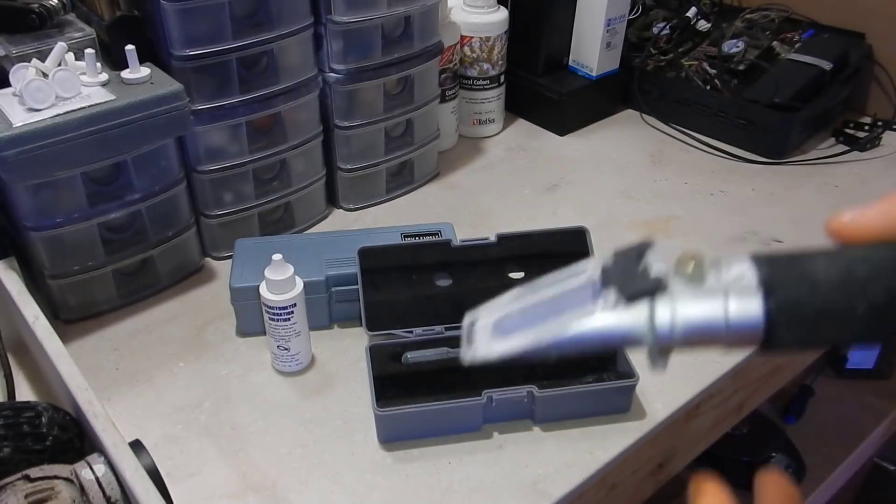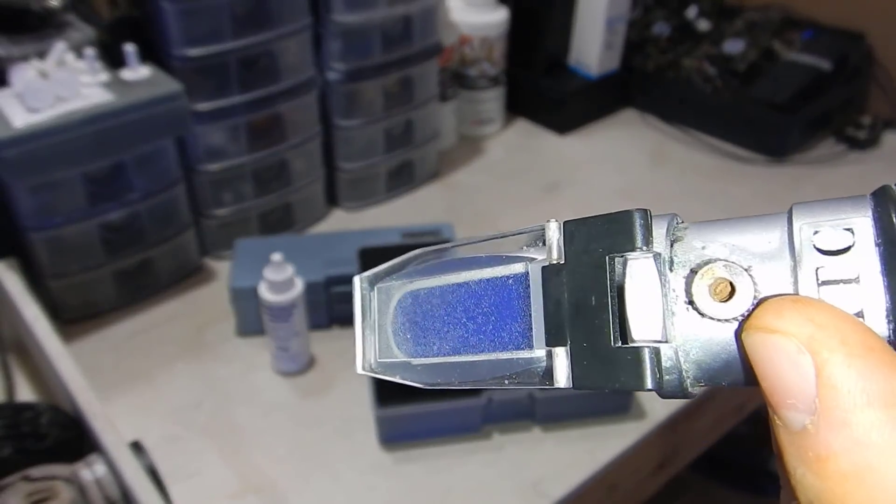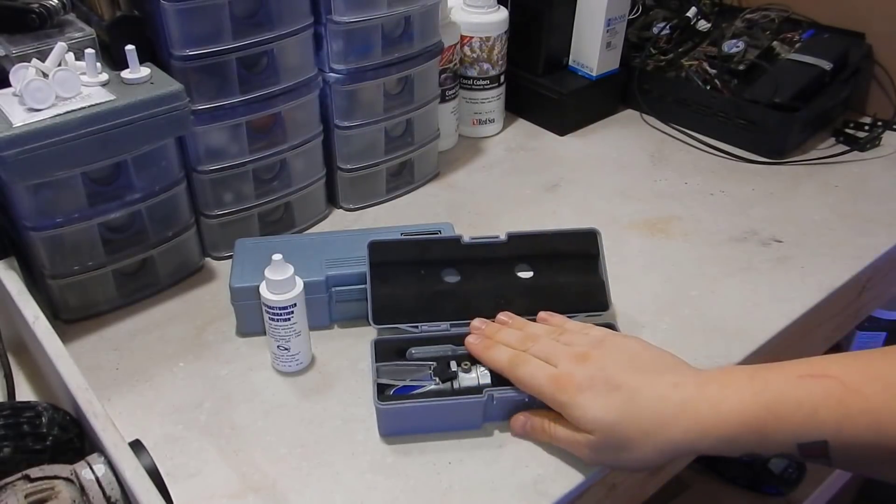So over time it just goes off and needs to be recalibrated, probably once a month depending on the quality. And over time I just got water in there and it doesn't allow me to turn the knob anymore. So it's time to get a new one. I did get a couple years out of it and it works perfectly.